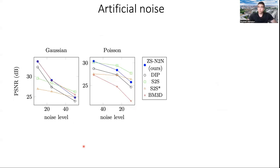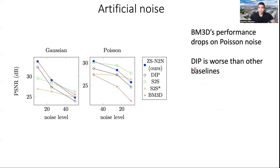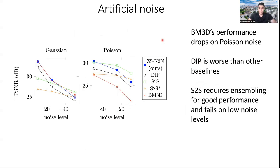Now to check the results on artificial noise, we have Gaussian and Poisson noise on different noise levels. We can see that BM3D, which is this red line, performs very well on Gaussian noise. But you can see the big drop on Poisson noise. Next is DIP. Generally, it works fine, but you can see that it's always less than the other baselines. Self-to-Self performs very well here on Poisson noise, also on Gaussian. But on the low noise level, it does not work so well.